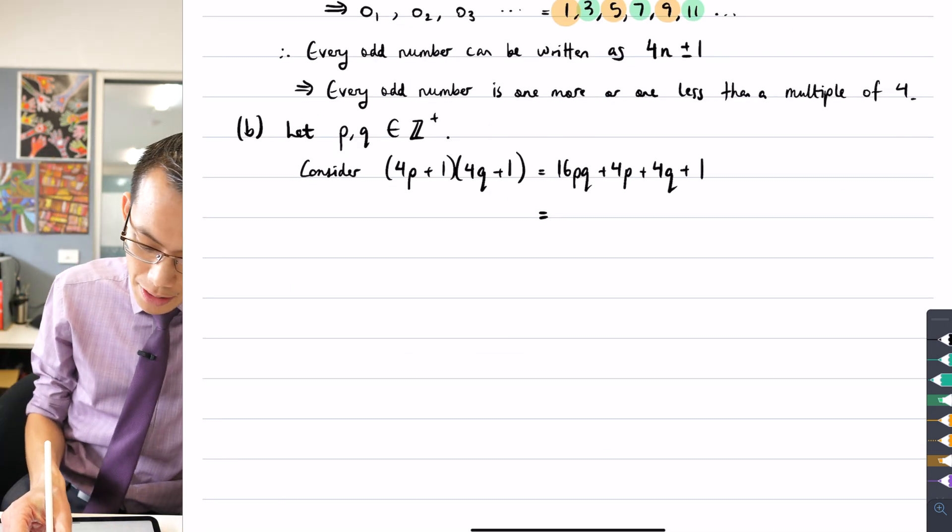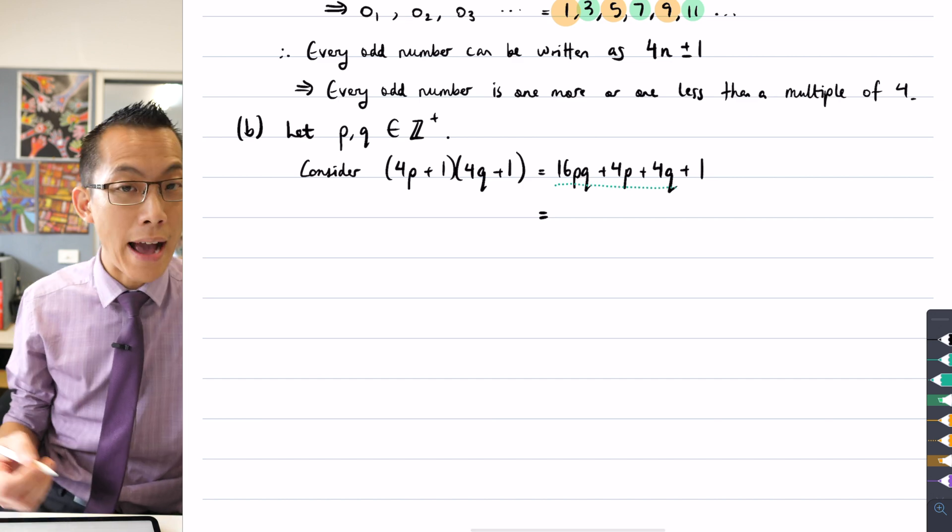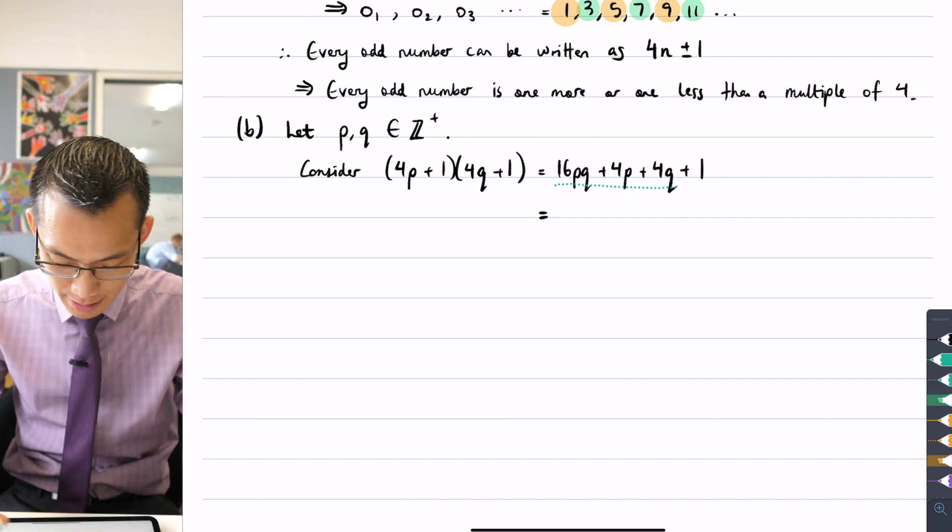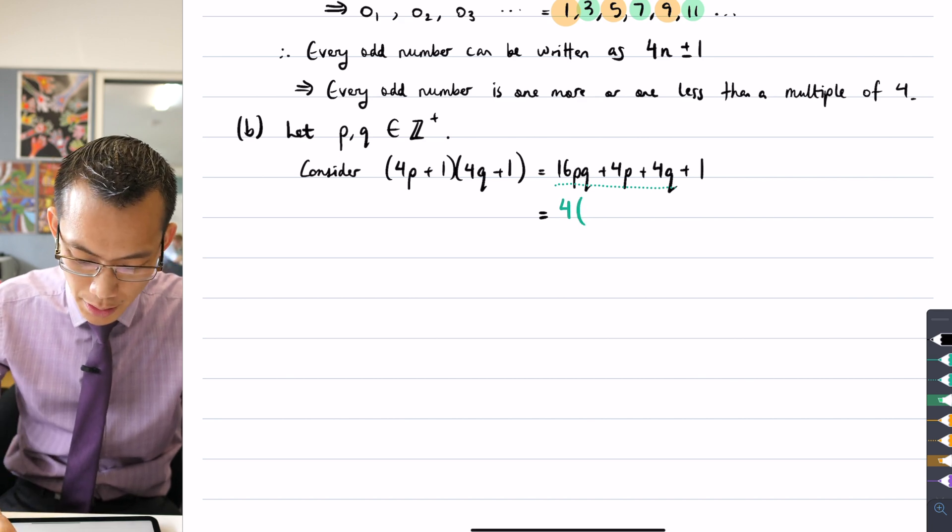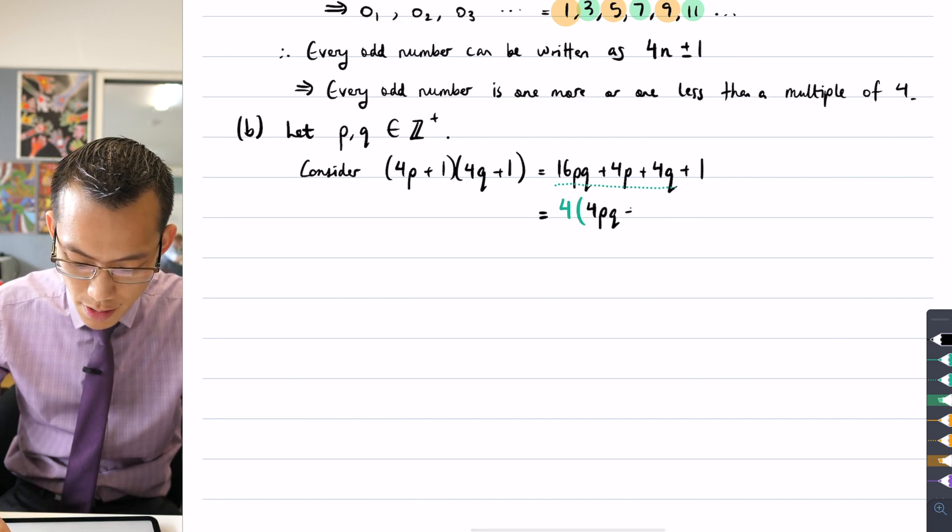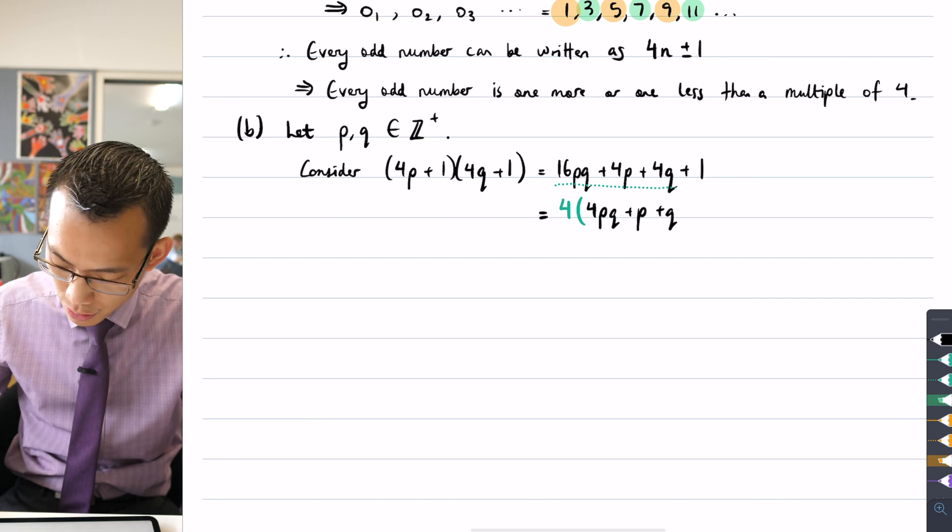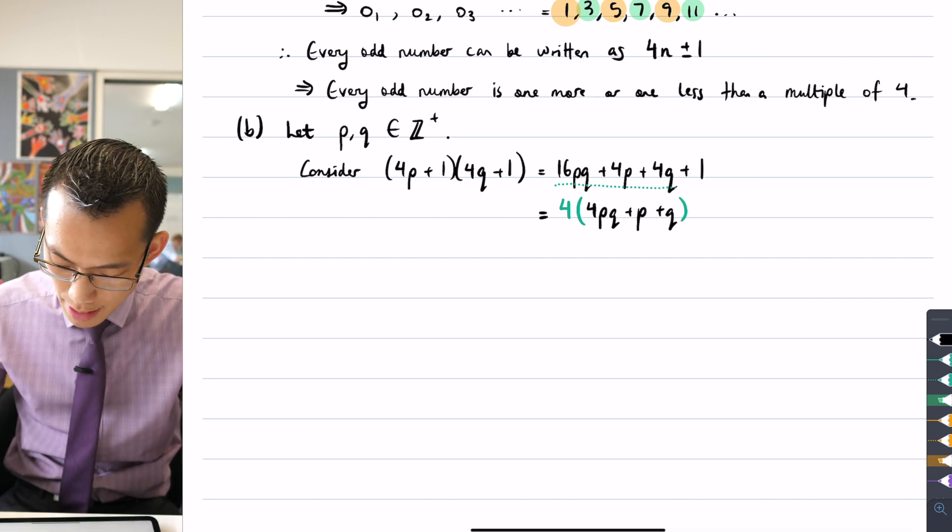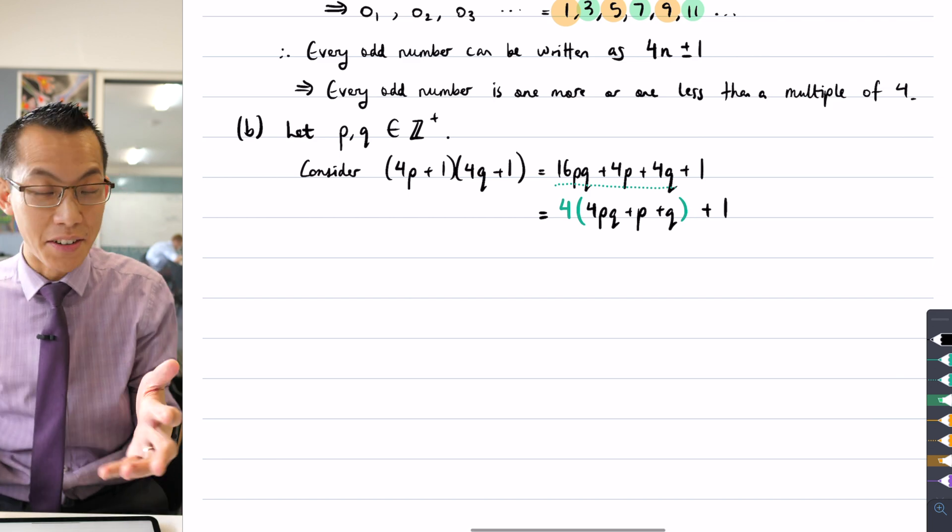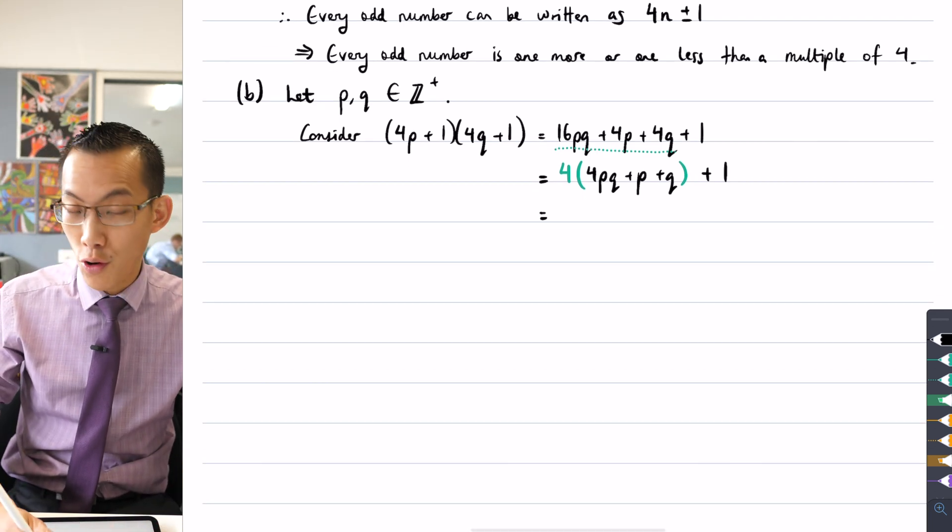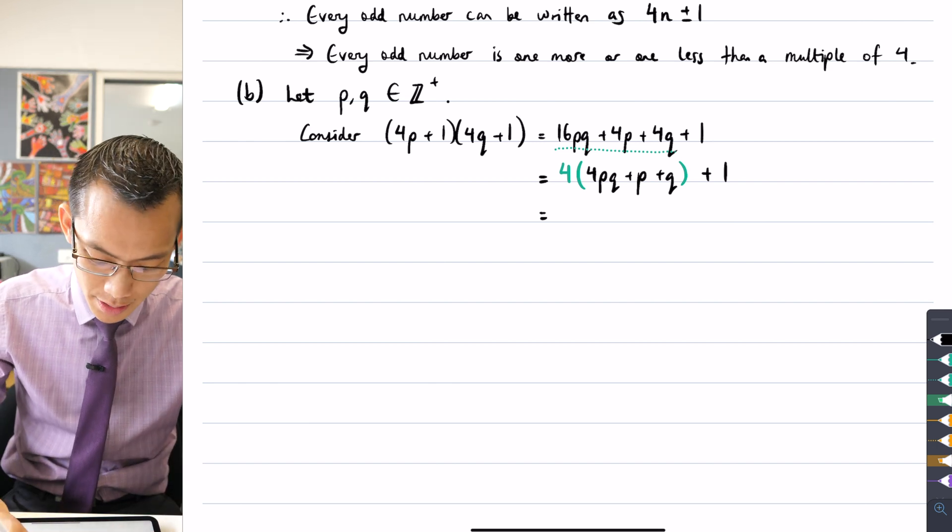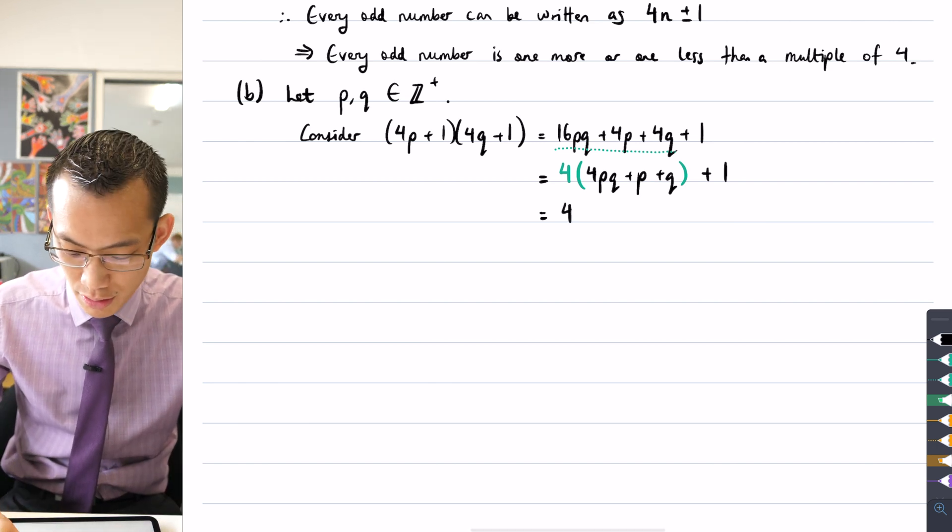Well, that's not too complicated to see because if you have a look at these terms here, I can factorize out that four. In fact, that's exactly what I'm going to do. Put the four out there, put some brackets here. What do I get left with? 4PQ plus P plus Q. Let's close our bracket and that plus one is already conveniently just sitting there.